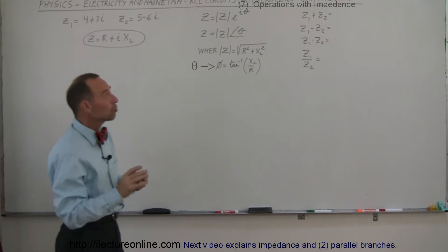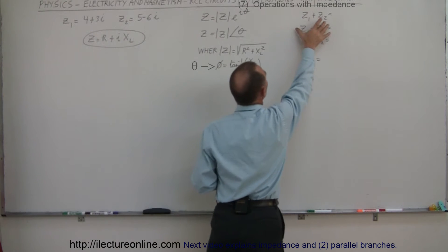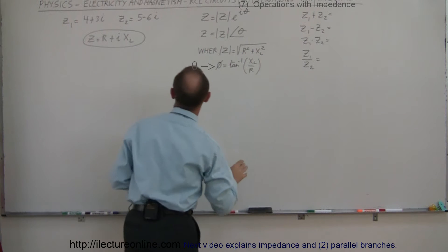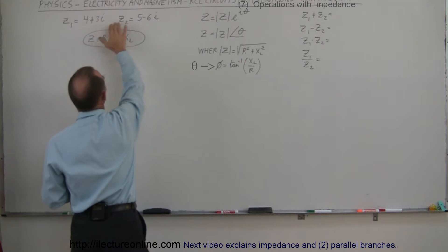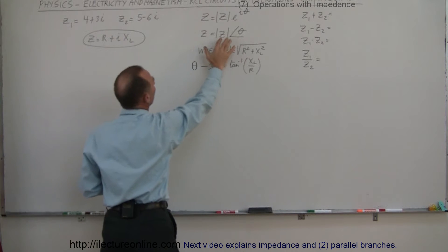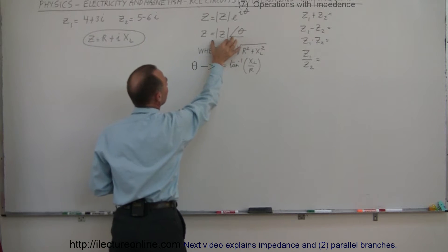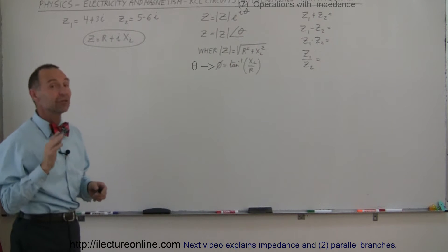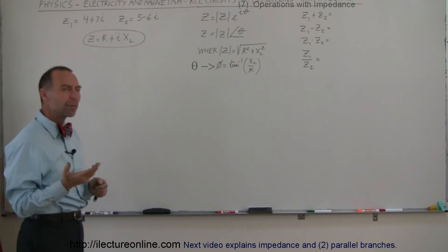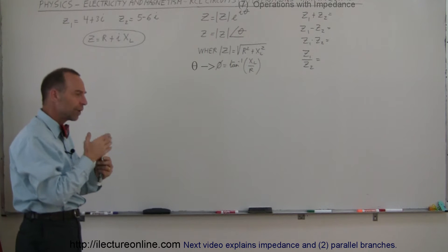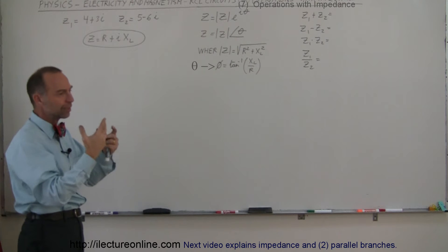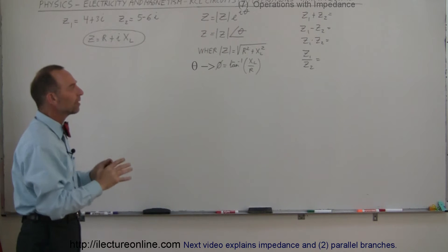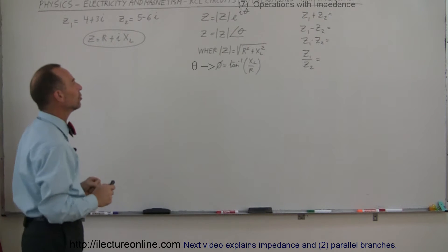When we add and subtract, we're going to do it as complex numbers, because that's easiest. But when we divide and multiply, we're going to change the format of the impedance from a complex number format to one that shows the magnitude and the phase angle, because then multiplying and dividing is a whole lot easier. Remember, when we divided two complex numbers, we had to find the conjugate, multiply them together, then divide — it's a big mess. So we're going to find an easier way to do that.